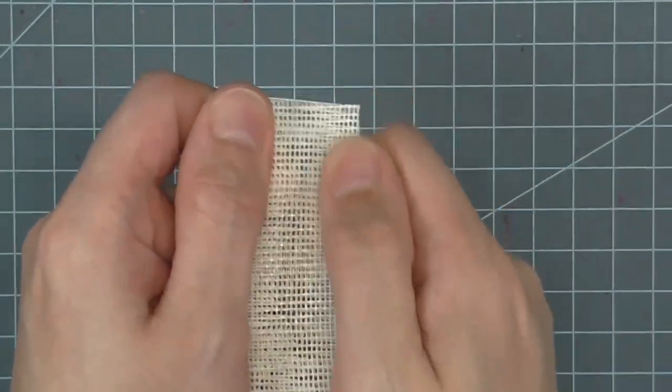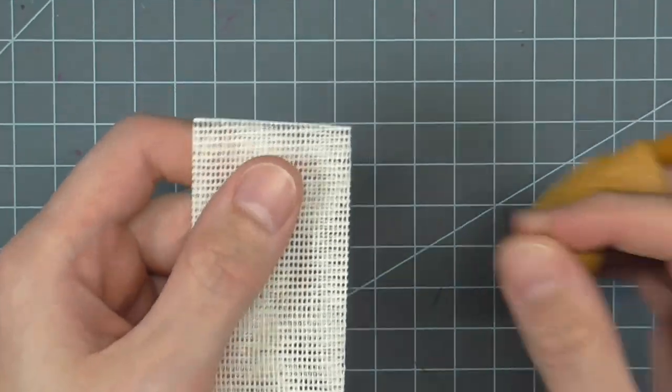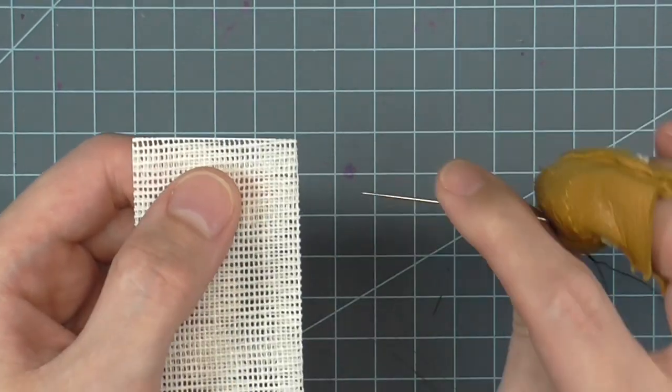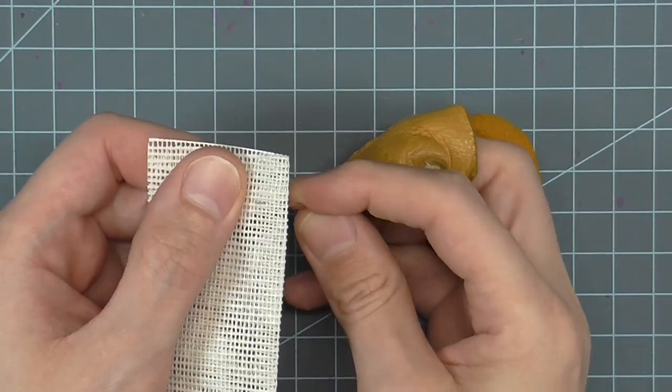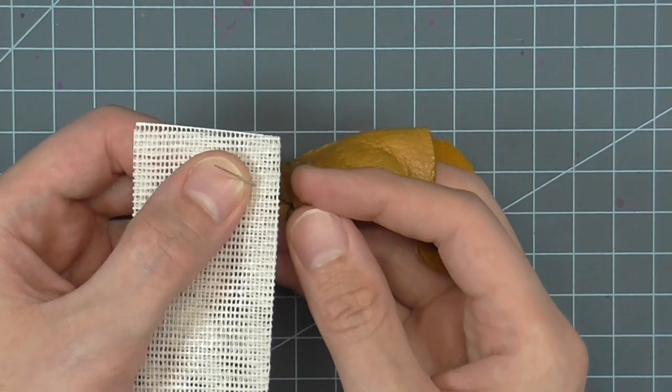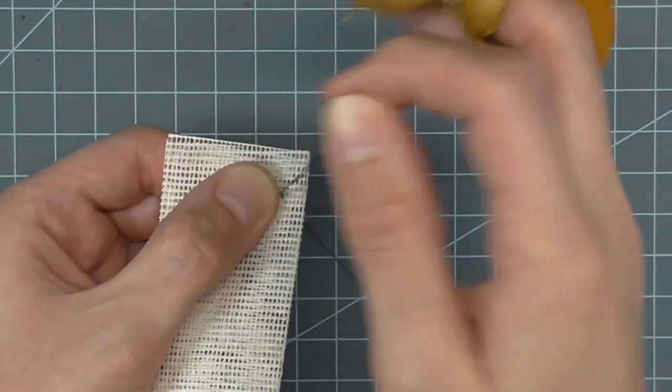I'm just going to show you the stitch first without any wire and on double buckram so you can really see the stitch. First we need to anchor the thread. Begin by bringing the needle and thread up from the back leaving a short tail.